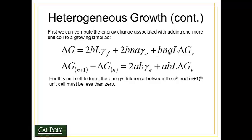If I wanted to make an additional ΔG(n+1) term, I would simply add N+1 to each of these terms. If I subtract ΔG(n+1) from ΔGn, I end up with 2AB·γE + ABL·ΔGv. For this unit cell to form, the energy difference between the Nth and (N+1)th unit cell must be less than zero. This term must be negative.